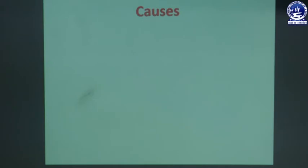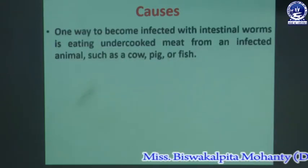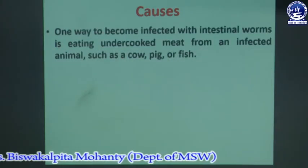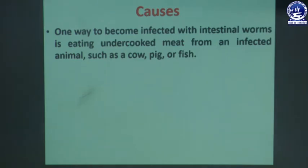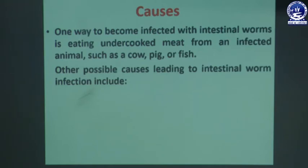Next we will discuss about different causes of intestinal worms. One way to become infected is eating undercooked meat from an infected animal such as a cow, pig, or fish. When a person eats undercooked or half-cooked meat from such animals, there is a risk of intestinal worm infection.